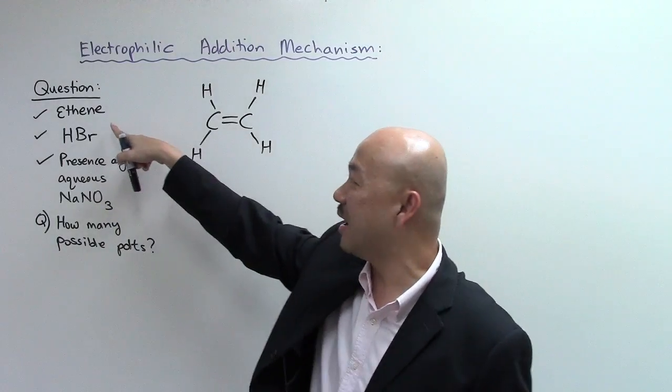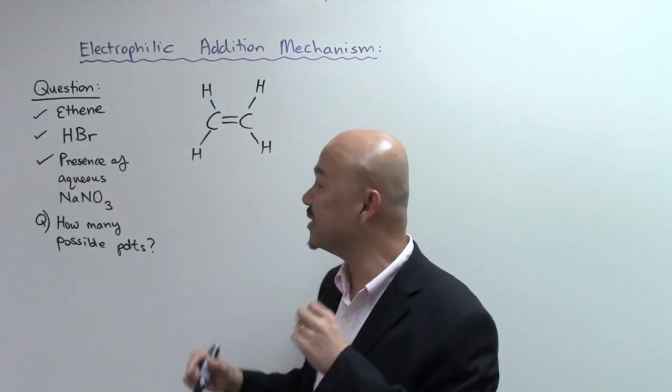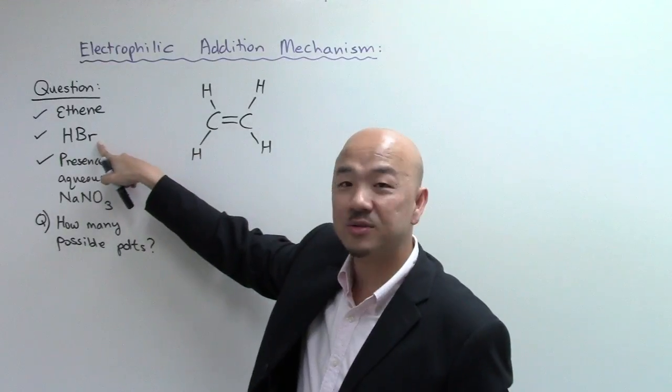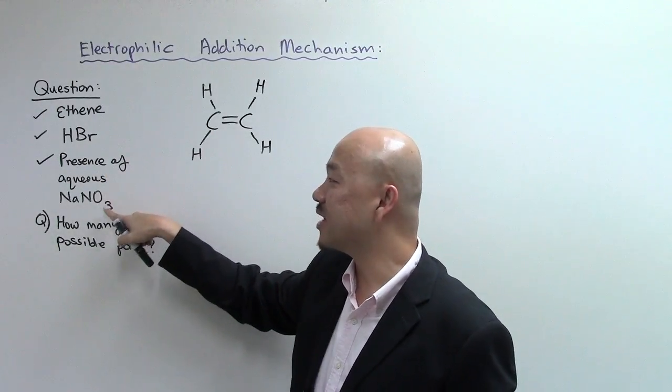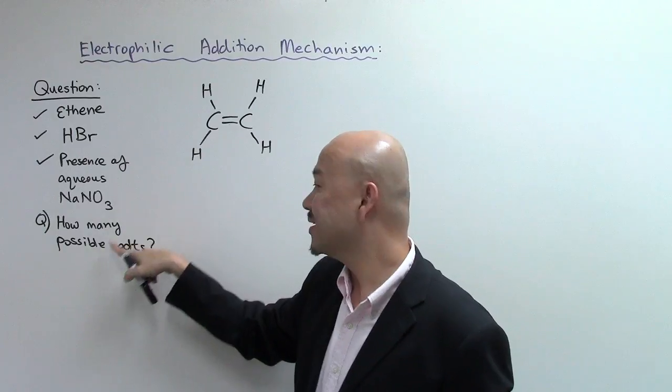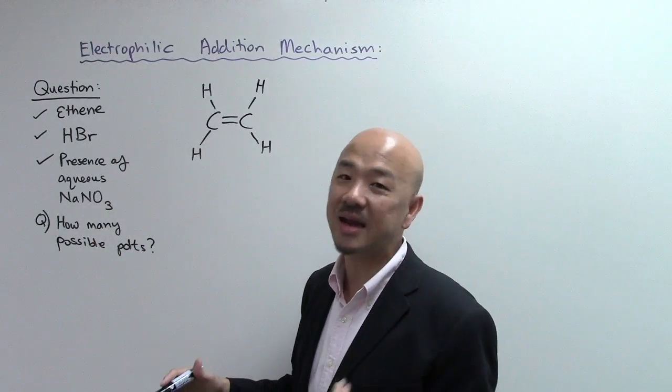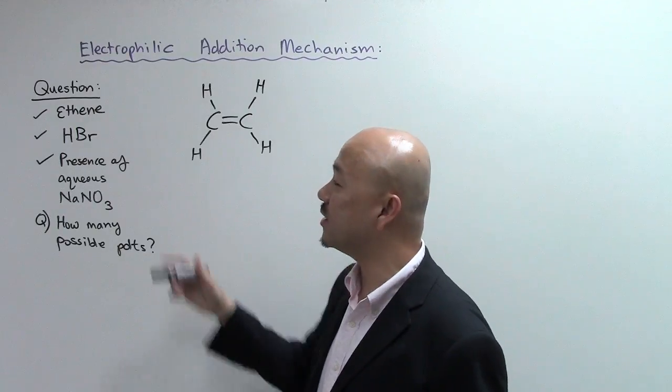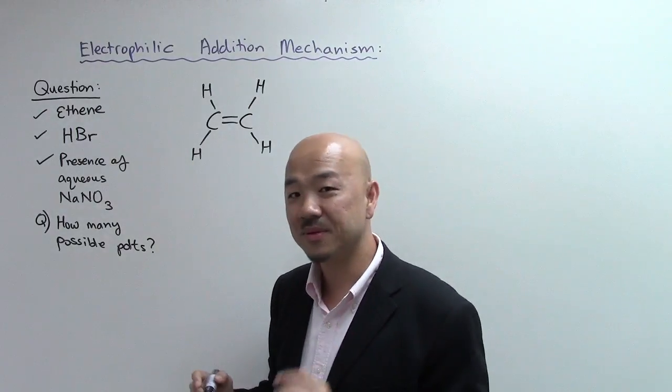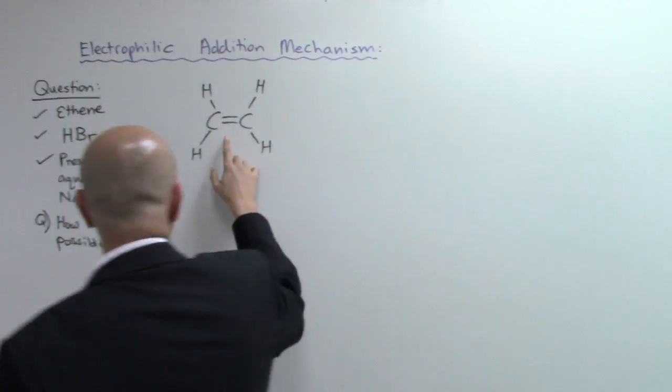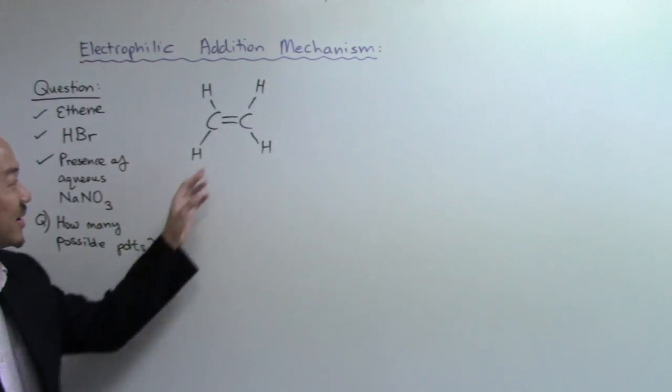We know that electrophilic addition mechanism is very important when it comes to reactions in alkenes, and today we're going to take a look at a very interesting question with regards to that. So in short, basically you have ethene, an alkene, symmetrical, reacting with hydrogen bromide. The question states it's in the presence of aqueous sodium nitrate. Essentially it asks you how many possible products we get when we do the electrophilic addition reaction of ethene in this kind of condition. Let's look at the question, the molecule.